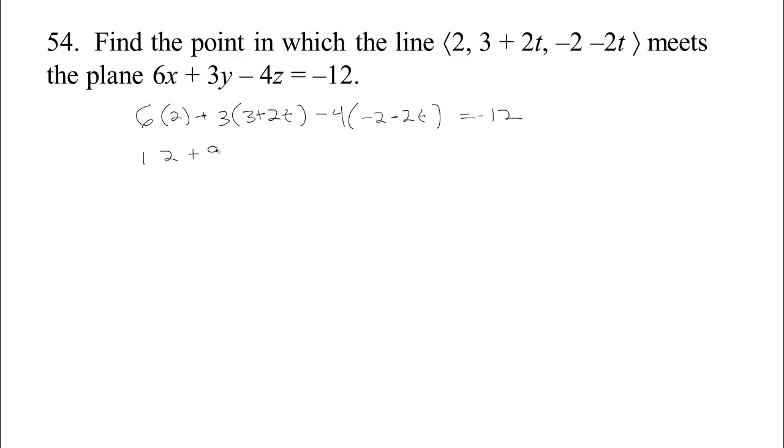So we have 12 plus 9 plus 6t. Negative 4 times negative 2 would make plus 8. Negative 4 times negative 2t would make plus 8t, has to equal negative 12. So let's combine some things here. We have 6t and 8t make 14t, and 8 and 12 make 20, and 9 make 29.